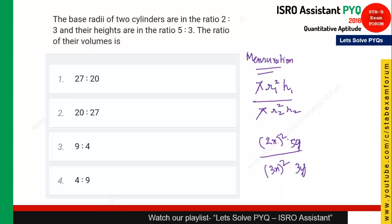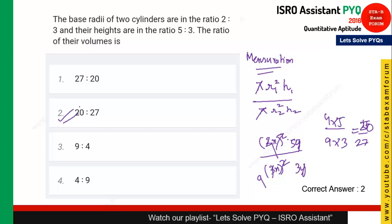Since π, x², and y cancel out, we get (4 × 5) / (9 × 3) = 20/27. So option 2 — 20:27 — is the right answer.